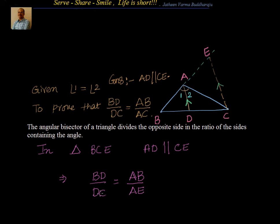Now this is what we reached using the basic proportionality theorem: BD by DC equals BA by AE. What we need to prove is BD by DC equals AB by AC. So we have BD and DC perfectly fine, but we have AE whereas we need AC. So we have to prove somehow that AE is equal to AC. I'll label the relevant angles as angle 3 and angle 4.